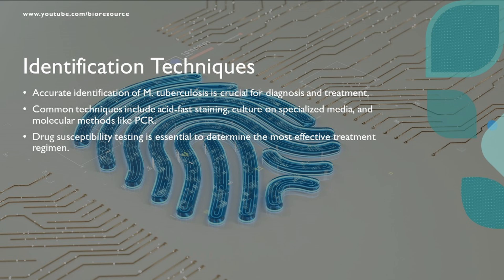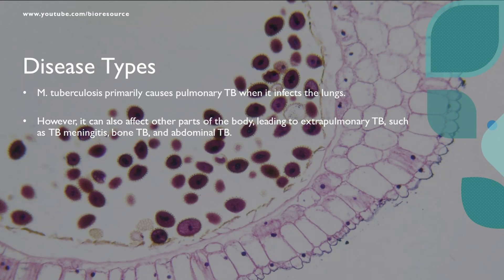Drug susceptibility testing is essential to determine the most effective treatment regimen. Coming to the pathogenesis, Mycobacterium tuberculosis primarily causes pulmonary TB, but it can also affect other parts of the body, leading to extra-pulmonary TB such as TB meningitis, bone TB, and abdominal TB.